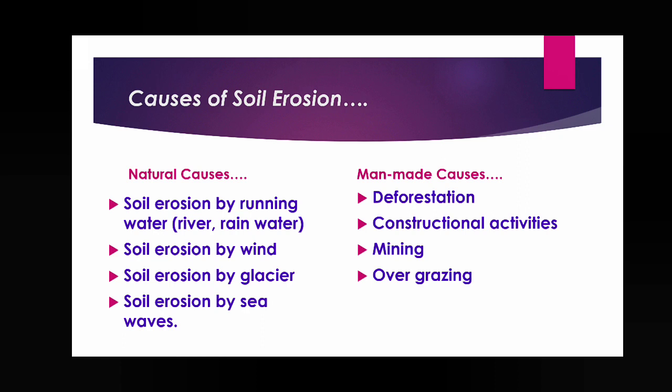Natural causes are controlled by nature — like soil erosion by running water, river, rainwater, solution by wind, soil erosion by glaciers, and soil erosion by sea waves. Also, if there is tree cover, raindrops cannot fall directly on the soil layer, which helps control soil erosion.